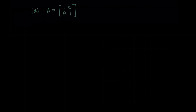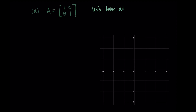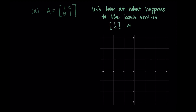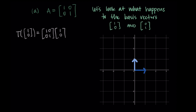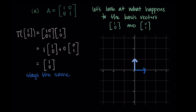Let's start with case A. Our matrix is 1, 0, 0, 1. In all of these examples, we're going to look at what happens to the basis vectors when we input them into the transformation. When we input (1, 0) into this matrix transformation, we're doing matrix A times (1, 0). That gives us 1 times the first column (1, 0) plus 0 times the second column (0, 1), which outputs just (1, 0). So the input and output are the same — the transformation didn't do anything to this vector.